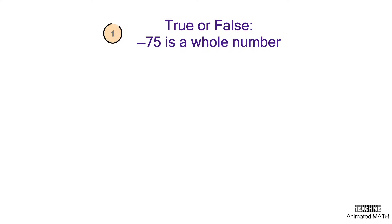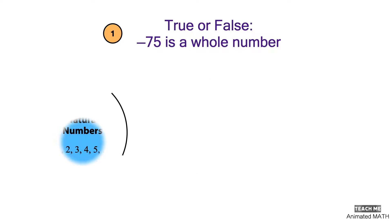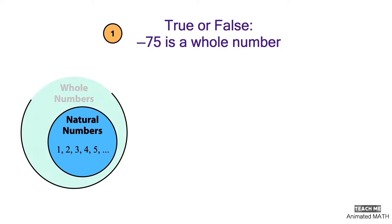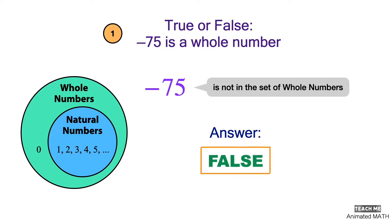True or false? Negative 75 is a whole number. The set of whole numbers are the counting numbers plus zero. Negative 75 is not included in this set, so the answer is false.